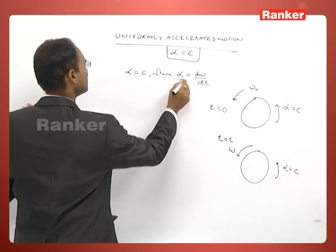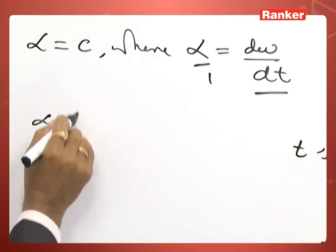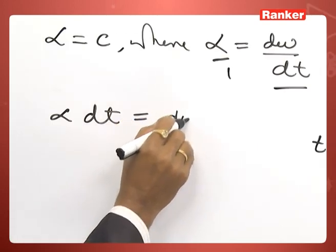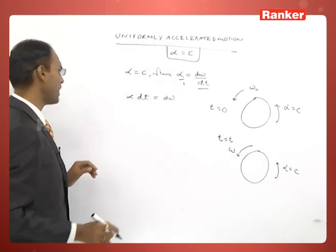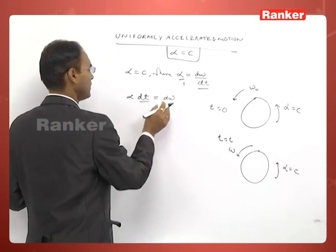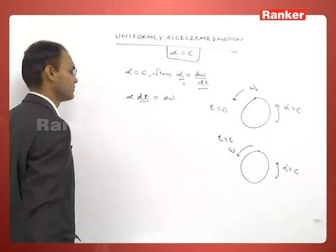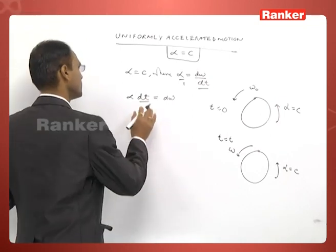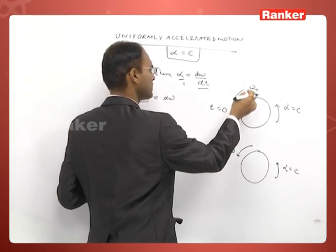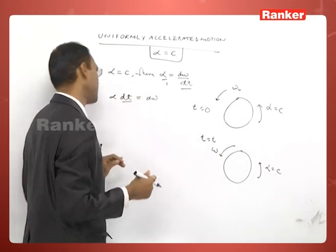Since angular acceleration is equal to d omega by dt, by cross multiplication we can get alpha dt equal to d omega. This physically signifies that during a very small time interval dt, the change in angular velocity is equal to d omega. I am not using vectors because I have taken all these quantities — angular velocity and angular acceleration — in the same direction, that is positive z direction.